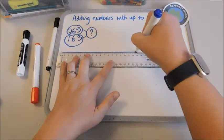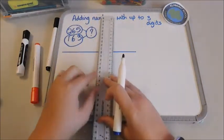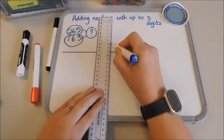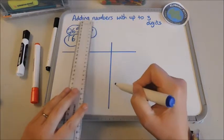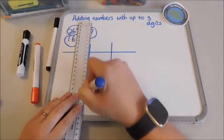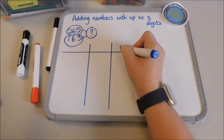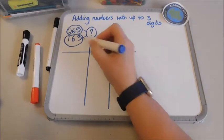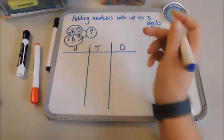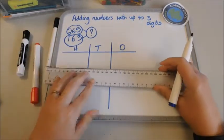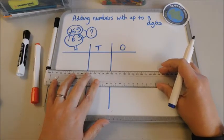The place value grid is where I split the numbers, I partition those numbers up into ones, tens and hundreds. So I've got my ones here, my tens, and my hundreds. You can use a place value grid with absolutely anything.